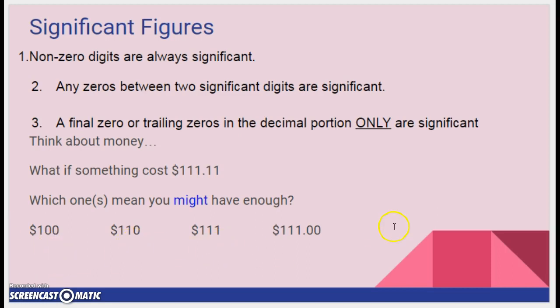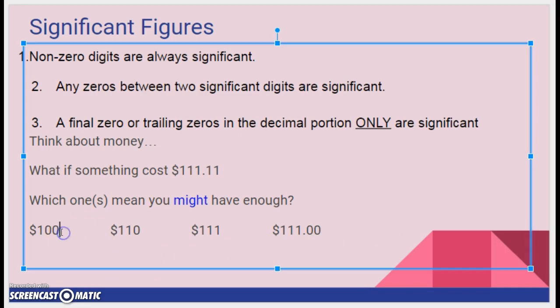So there's a difference between all of these and there's a difference if I put a decimal after it. If I put a decimal after $100, that means I have exactly $100 and I do not have enough money.